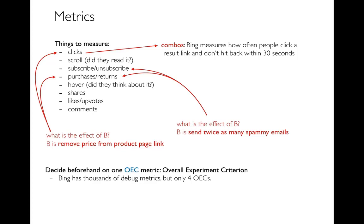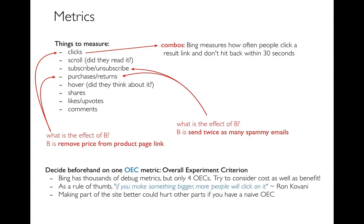A recommendation is that you should decide beforehand on an OEC — an Overall Experiment Criterion. This is going to be the one thing you really look at when trying to decide if version A or B is better. With all these metrics, it's very easy to run your experiment first and then find a metric that supports you afterwards — but then you're just fooling yourself, so you have to decide upfront. At Bing, as mentioned in that keynote, they really only have four OECs and you have to pick one before you do your experiment. They also have thousands of debug metrics — the OEC tells you whether to do something, while the debug metrics tell you why.